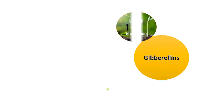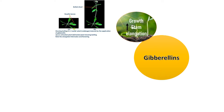Gibberellin is also a growth promoter primarily involved in cell division and stem elongation. A rosette or dwarf plant's dwarfism can be reversed by treating with gibberellin. When treated with gibberellin, there is internodal elongation. This rapid elongation and flowering is often termed bolting.